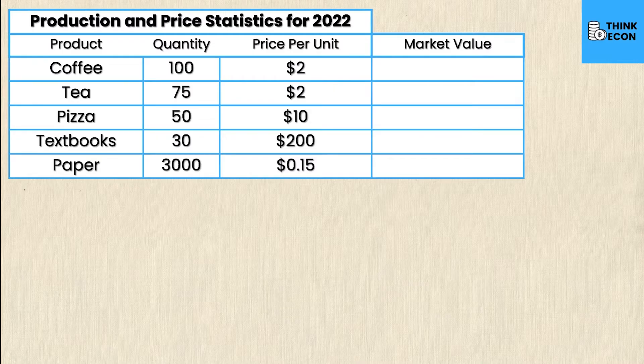In this economy we're assuming there are only five goods: coffee, tea, pizza, textbooks, and paper. However, in this economy we're assuming that paper is only used to make textbooks, pizza boxes, and coffee and tea takeout cups. That's the only use for paper in this economy.